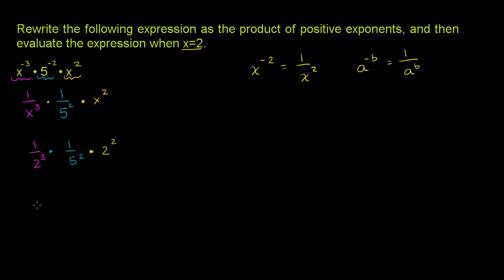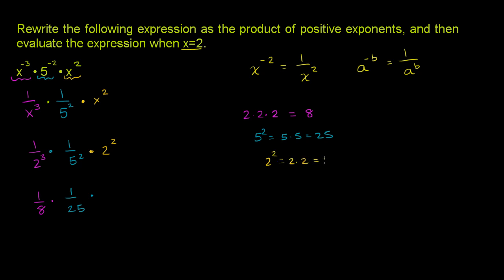Every place we saw an x, we're now putting a 2. 2 to the third power — as a reminder, that's 2 times 2 times 2, which equals 8. So this is equal to 1 over 8 times 1 over 5 squared. 5 squared is 5 times 5, which equals 25. And then we're going to multiply that times 2 squared. 2 squared is 2 times 2, which equals 4. So times 4.